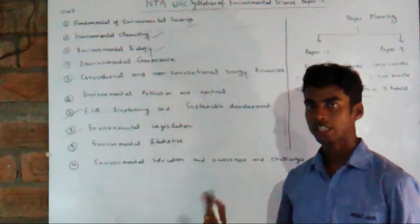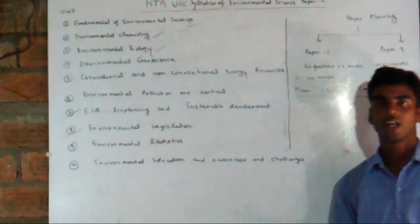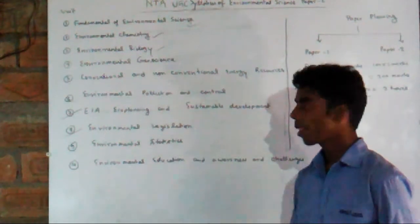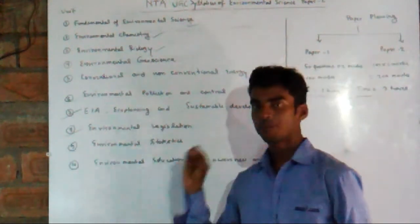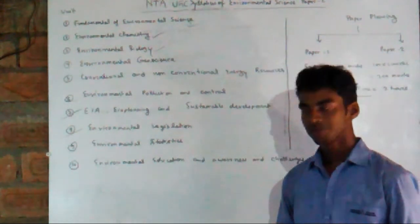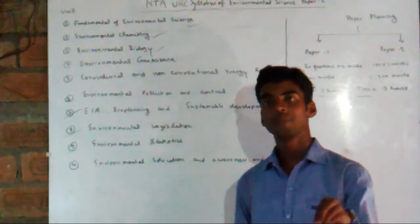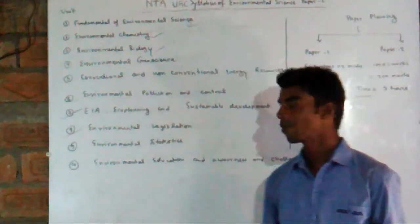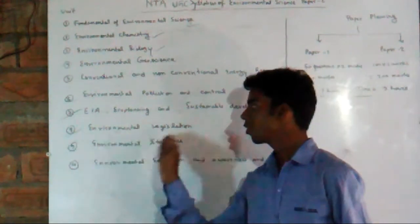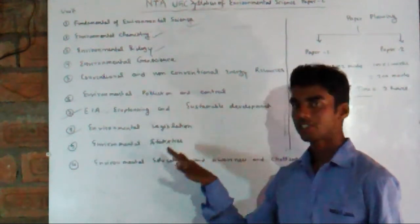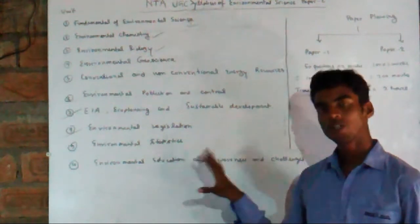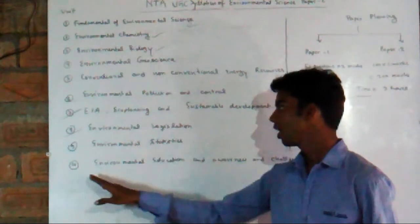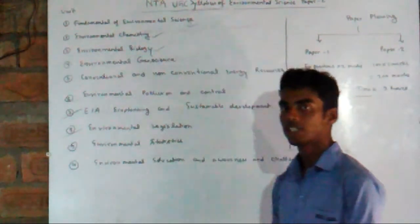The next unit is environmental statistics. This will deal with problems arising in normal statistical concepts — what kind of samples you will be given and finding their mean, median, mode, and regression. Many types of numerical problems will be asked from this unit and you will have to solve them on the basis of fundamental mathematical concepts.